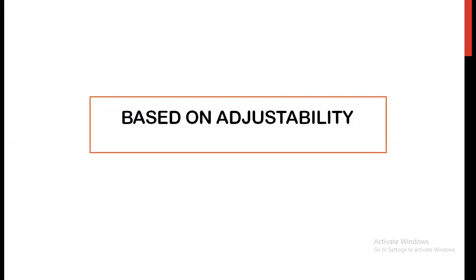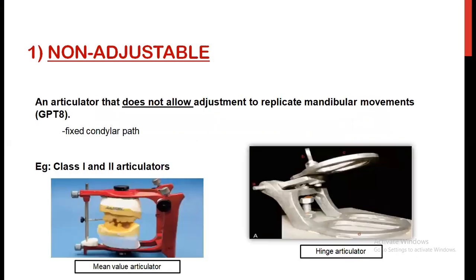Coming to the first classification, that is based on adjustability. The first type is the non-adjustable articulator. According to the GPT definition, it is an articulator that does not allow adjustment to replicate the mandibular movements, because it has a fixed condylar part. We cannot do any adjustment after transferring the jaw relation. The main examples are class 1 and class 2 articulators — mean value articulators and hinge articulators are examples of non-adjustable articulators.